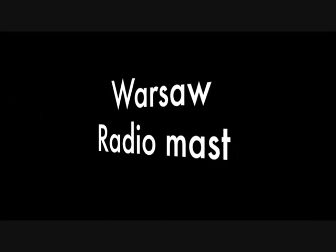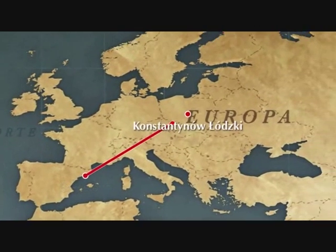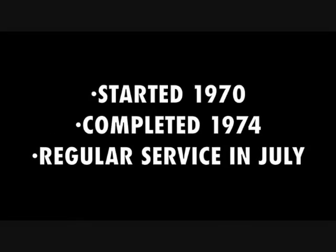The Barso Radio Mast was a radio frequency tower used by Barso Radio Television. The mast, which was designed by Jan Pollack, was 646.38 meters tall, and its base was 115.2 meters above sea level. Its construction started in July 1970 and was completed in May of 1974. The tower entered regular service in July of that year.